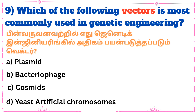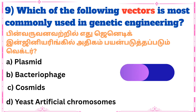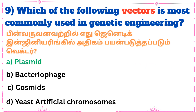Ninth question: Which of the following vectors is most commonly used in genetic engineering? Answer: Plasmid.